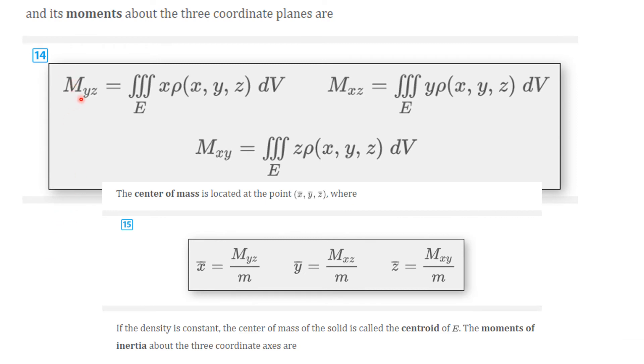As before then, the moment about the y, z plane is given by this expression, a triple integral. The moment about the x, z plane is given by this, a triple integral. And about the x, y plane is given by this, again a triple integral. And the center of mass is located at the point x-bar, y-bar, z-bar, where x-bar is this moment divided by m. Y-bar is this moment divided by m. And z-bar is this moment divided by m. We're going to do an example of this in a bit.